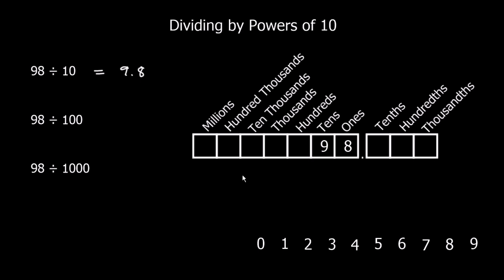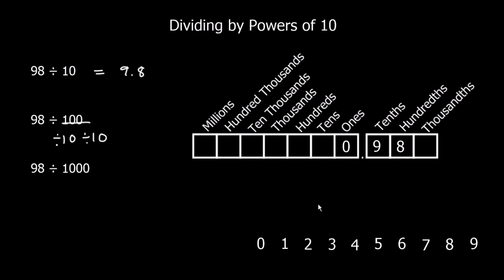Going back to 98, this time we divide by 100, which is the same as dividing by 10 two times. We move all of the digits back twice, giving us 0.98. We write that as 0.98.